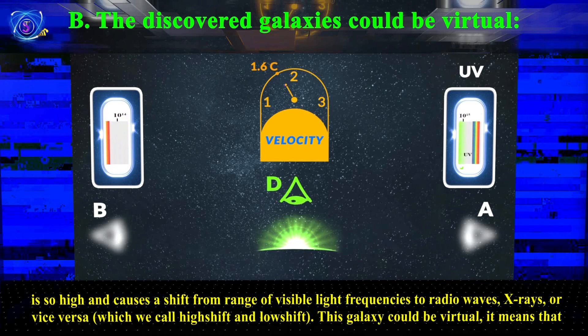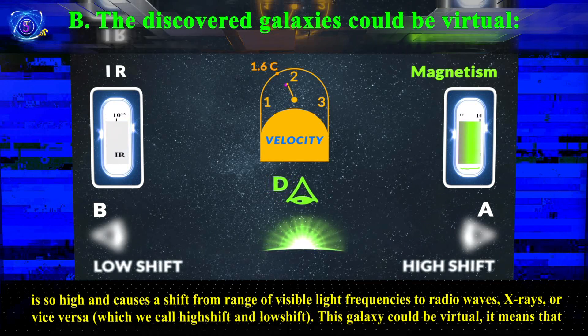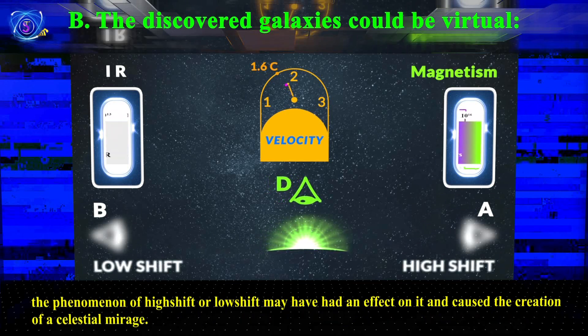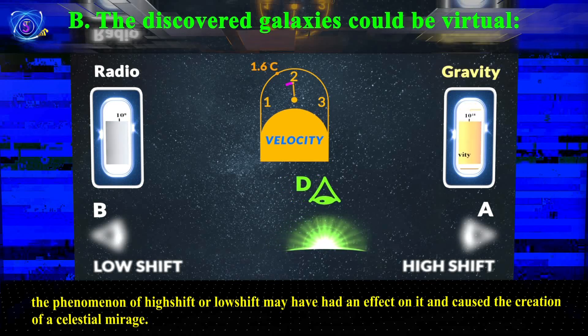This galaxy could be virtual. It means that the phenomenon of high shift or low shift may have had an effect on it and caused the creation of a celestial mirage.